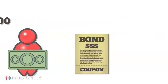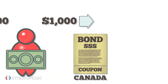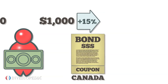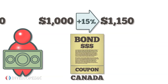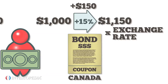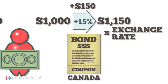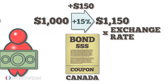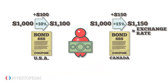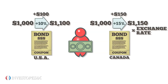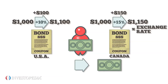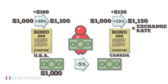Or she could invest in a Canadian bond which has a 15% interest rate. She figures her return as $1,150 multiplied by the exchange rate between the U.S. and Canadian dollars. If there's uncovered interest rate parity between the two investments, the Canadian dollar will depreciate against the U.S. dollar by about 5%.